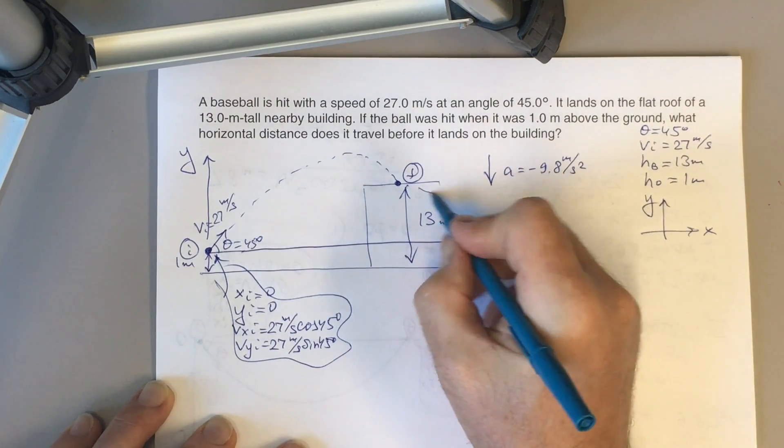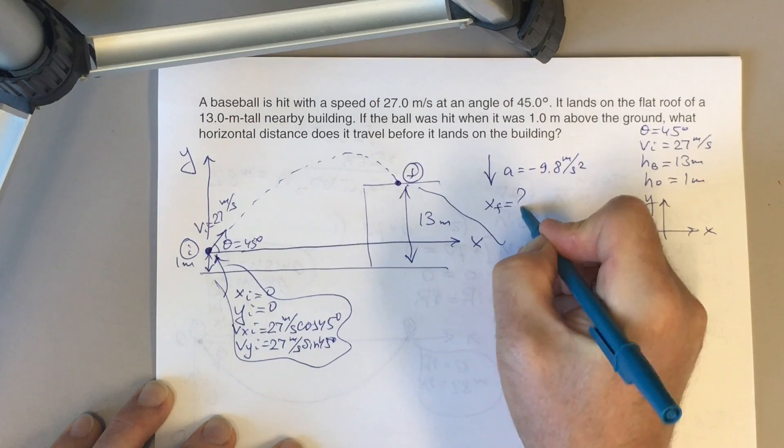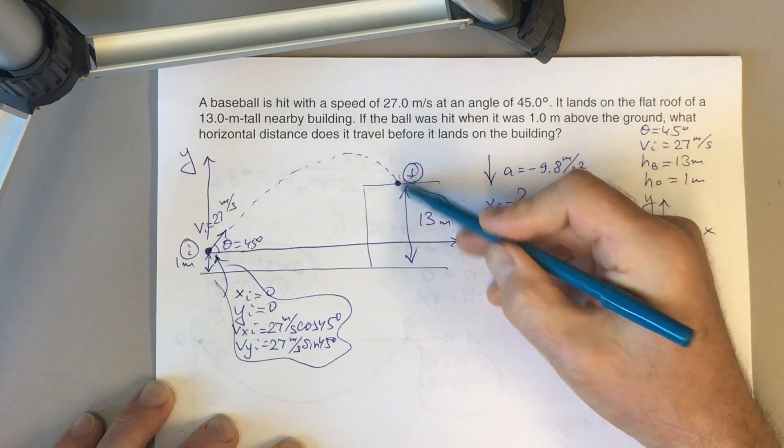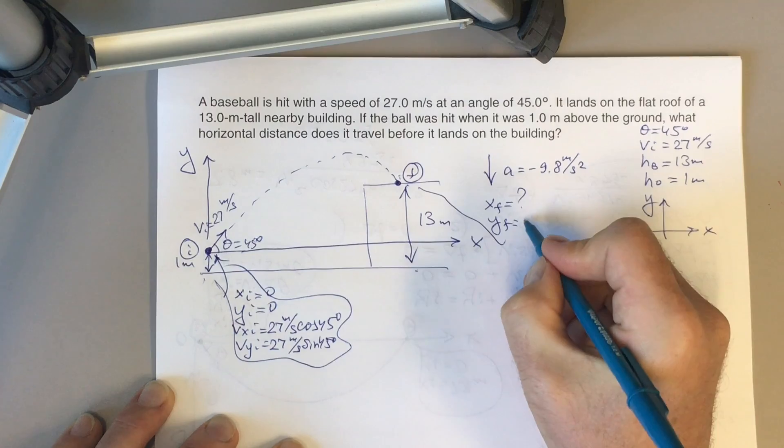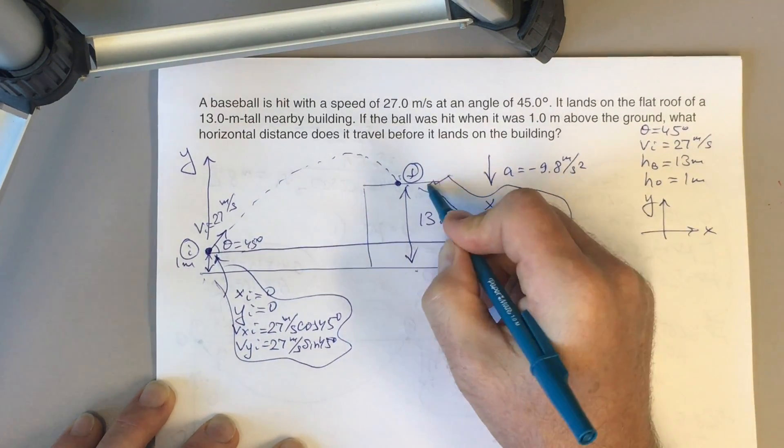What do we know about our final point? We have to find x-final. We don't know it. The only thing we know is y-final. It would be 13 meters minus 1 meter, which is 12 meters. You see this from your picture. So that's what we know about our final point.